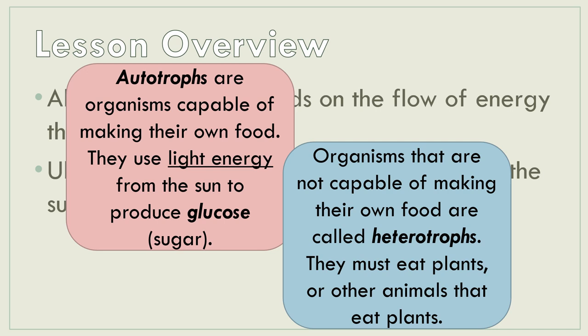These organisms are called heterotrophs. To recap: autotrophs are organisms capable of making their own food. On the other hand, heterotrophs cannot make their own food. These autotrophs become the source of our energy, and they produce their food from light energy from the sun or chemicals in their surroundings.